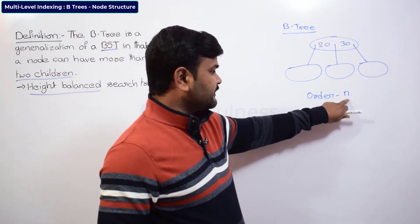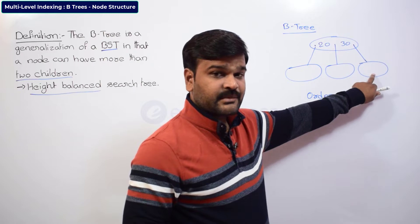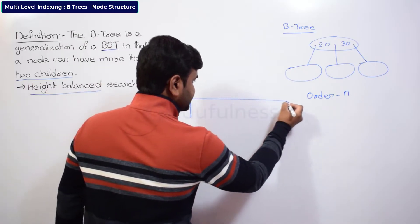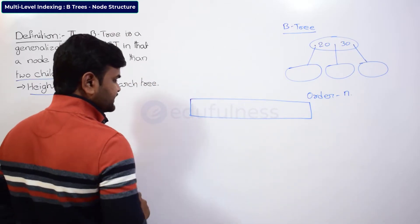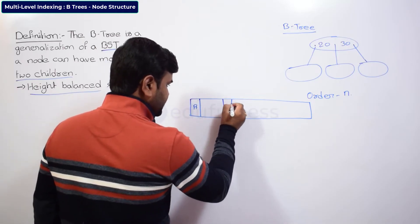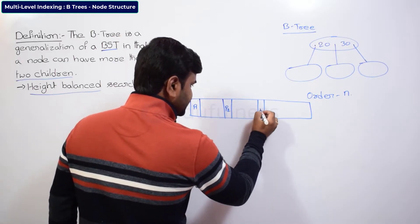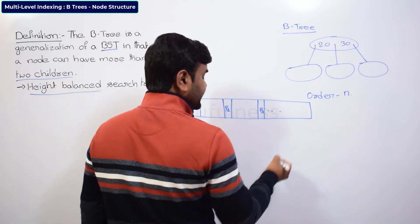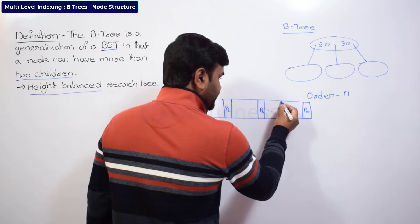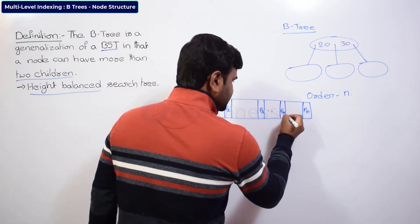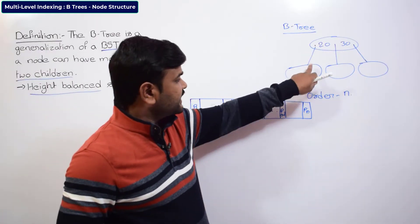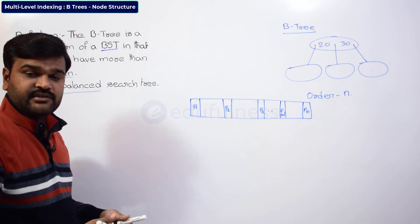Here also, n is nothing but at most n children allowed. That is nothing but at most n block pointers you are going to have. So you can take one node structure like this: pointer one, pointer two, pointer three, and so on up to pointer n — before that pointer n minus one. These are pointers to children, that is nothing but pointer to a block.